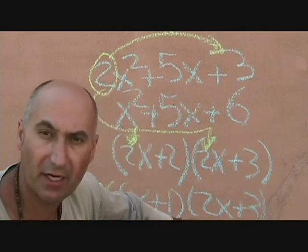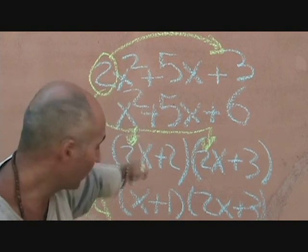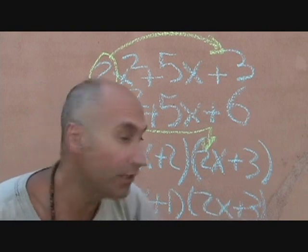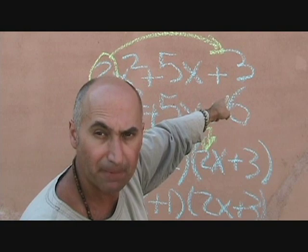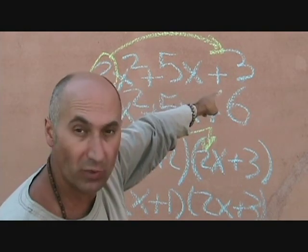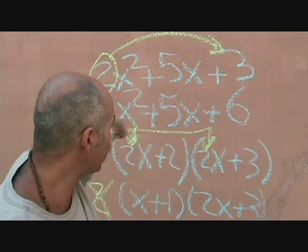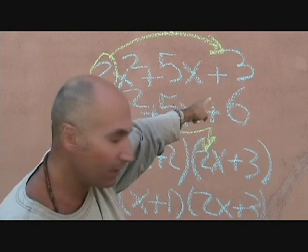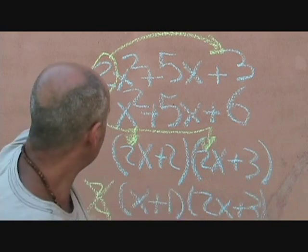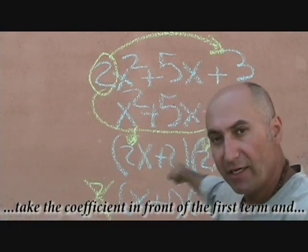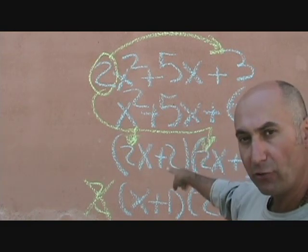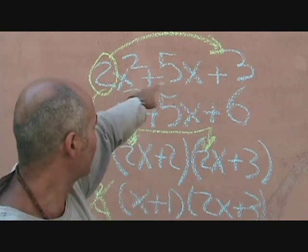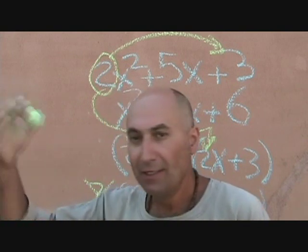So x plus 1 times 2x plus 3 is the original expression factored. If you multiply this out, you'll end up with that original term. Go ahead and foil it out. So this is the four-step method: step one, take the coefficient in front of x squared and multiply it by c; drop it in the next step and that product becomes your new c term.